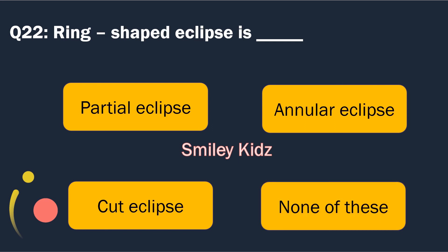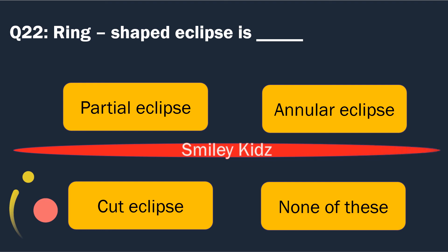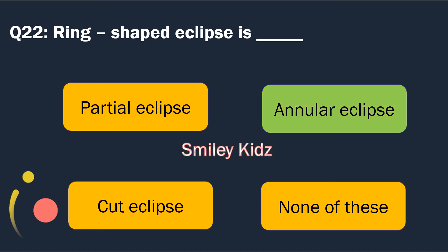Question number 22. Ring shaped eclipse is. Options are: Partial eclipse, Annular eclipse, Cut eclipse and None of these. The right answer is Annular eclipse. Annular eclipse is a ring shaped eclipse.